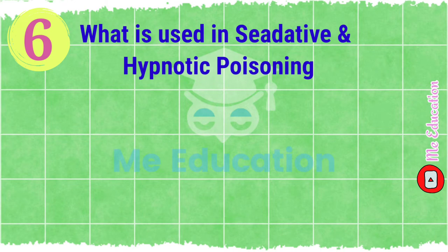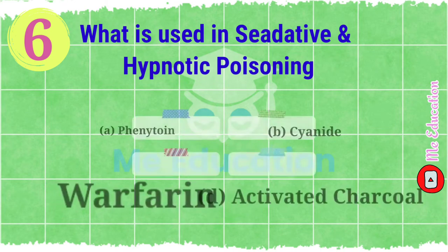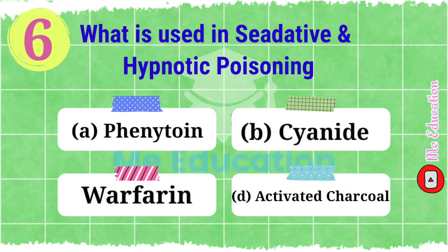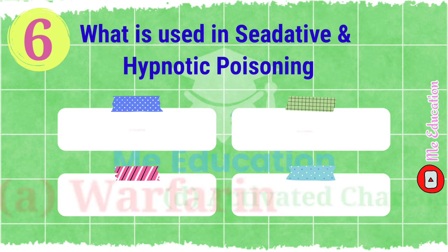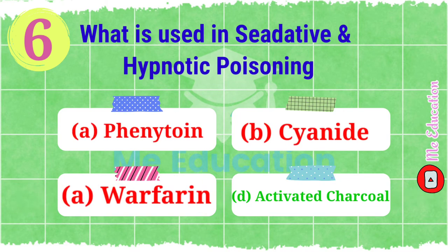Question number six: what is used in sedative and hypnotic poisoning? Options: A) phenytoin, B) cyanide, C) warfarin, D) activated charcoal. Pause the video and try to solve this. The right answer is option D, activated charcoal.